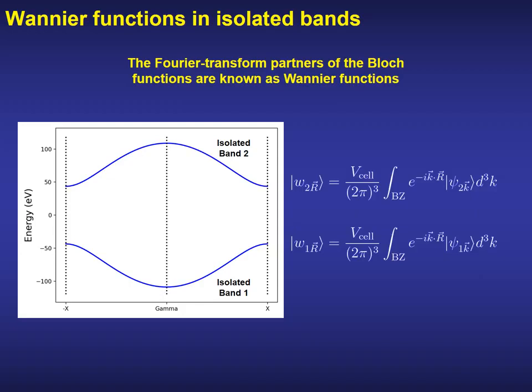In our simple example, if we have two isolated bands, each of them will generate a given Wannier functions where the Fourier transform has to be performed on the Bloch functions describing a given band.